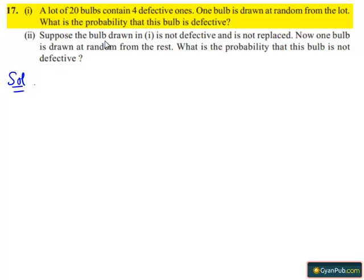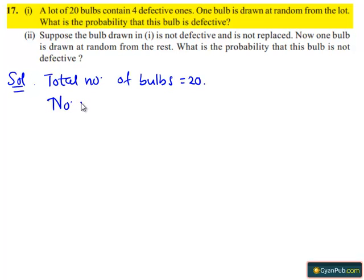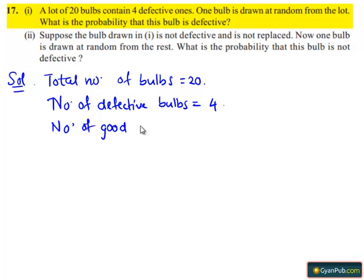Let us first write the given data. A lot contains 20 bulbs, so total number of bulbs in the lot equals 20. Number of defective bulbs equals 4, which means number of good bulbs equals 20 minus 4, which is 16.